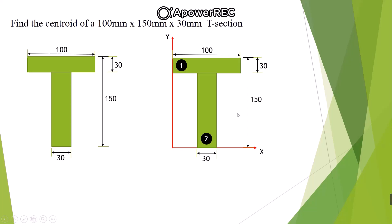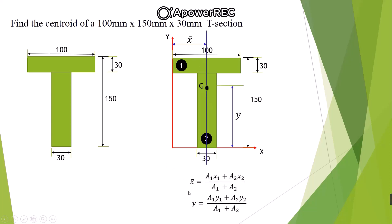Now let us see how to locate the centroid of this composite section. I am going to draw a vertical line passing through the center of the T-section. The T-section is symmetrical about this line, so the CG of the composite section lies somewhere on this line. We assume that G, the centroid of the T-section, is at a distance of x-bar from the Y-axis and y-bar from the X-axis.